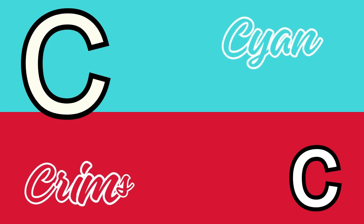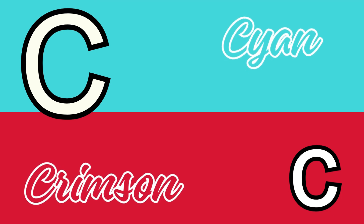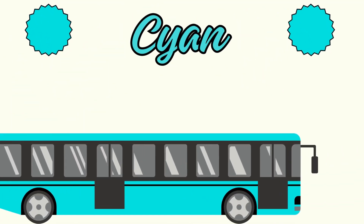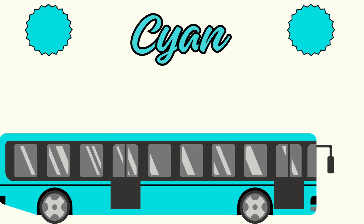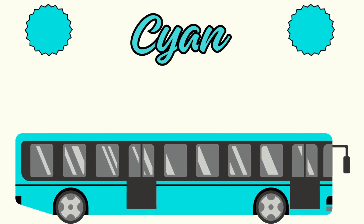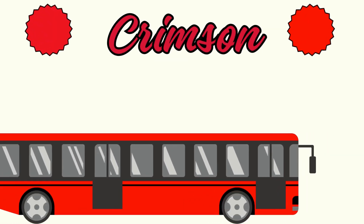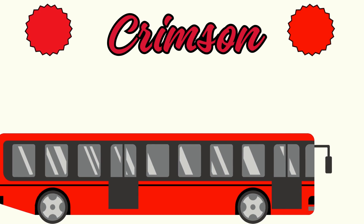C is for cyan color and crimson color. This is cyan color bus. This is crimson color bus.